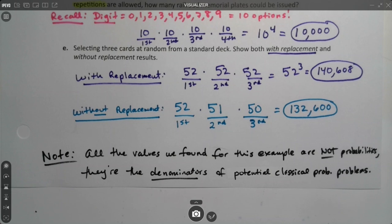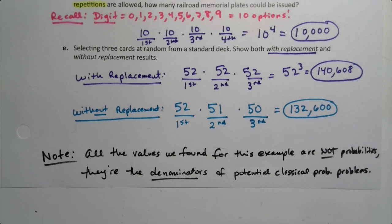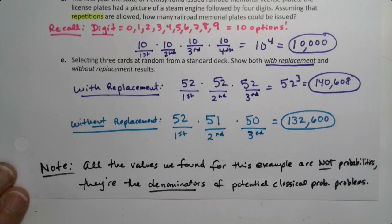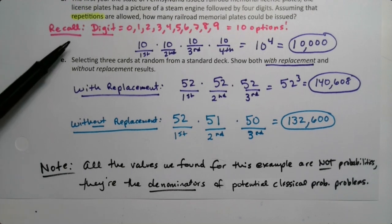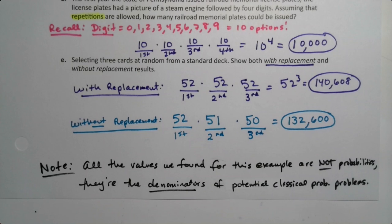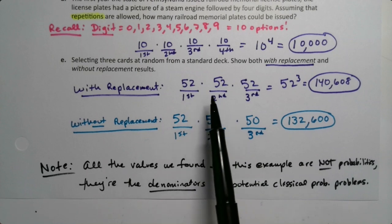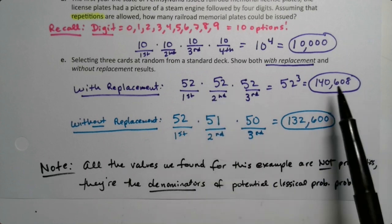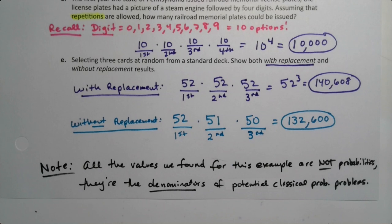Again, these are not probabilities. These are just the denominators of potential probabilities. They can't be probabilities. Probability has to be less than one. Anytime a value is more than one, it's not a probability. So these aren't probabilities. What they are is the denominators of potential classical probability problems. So I could say what's the chances of this particular license plate, and you'd say it's one out of 10,000. They're the denominators of potential problems, but they're not probabilities unto themselves because they couldn't be.